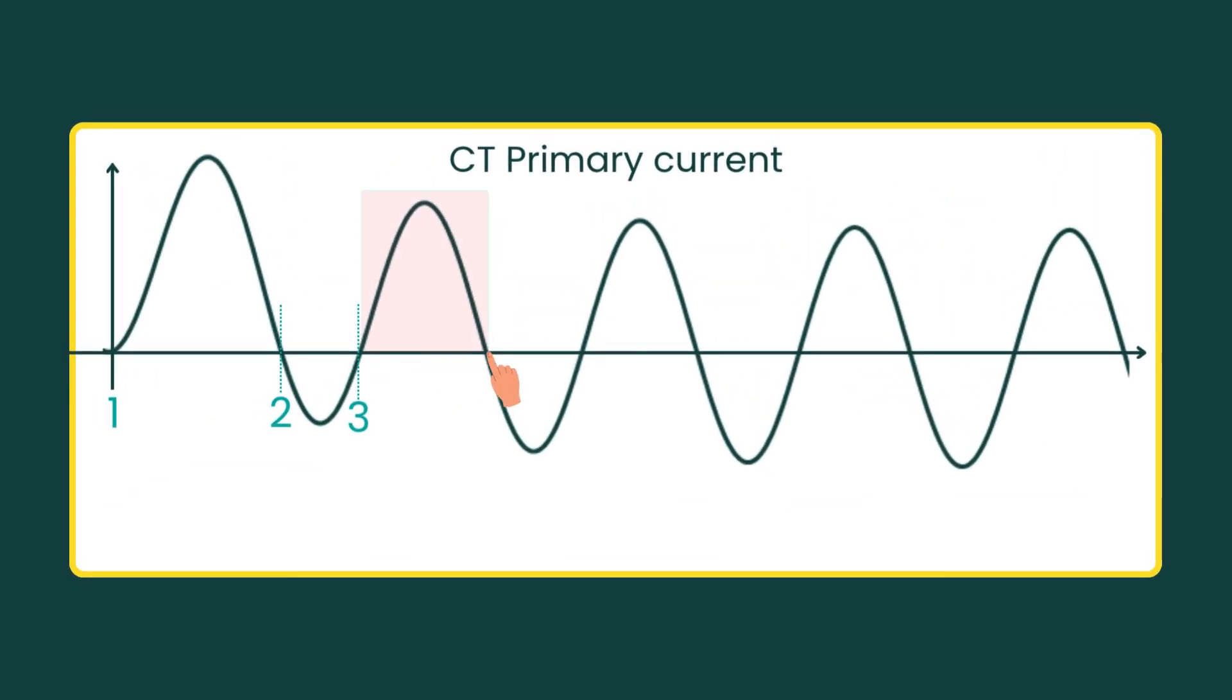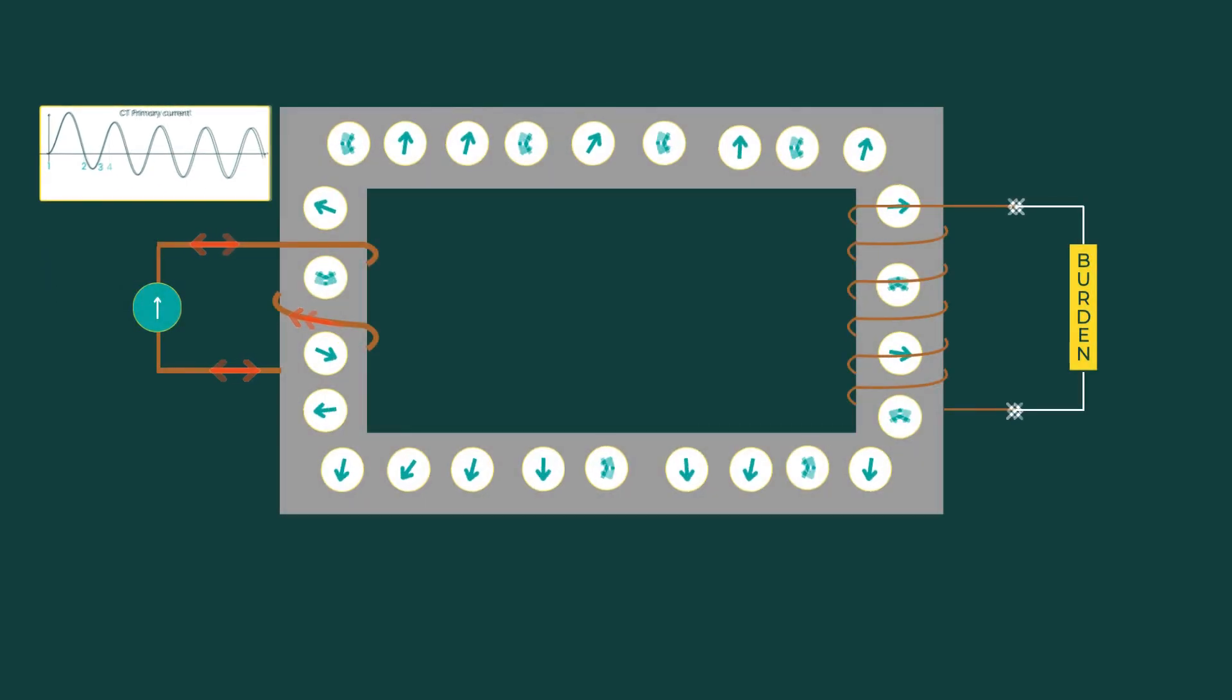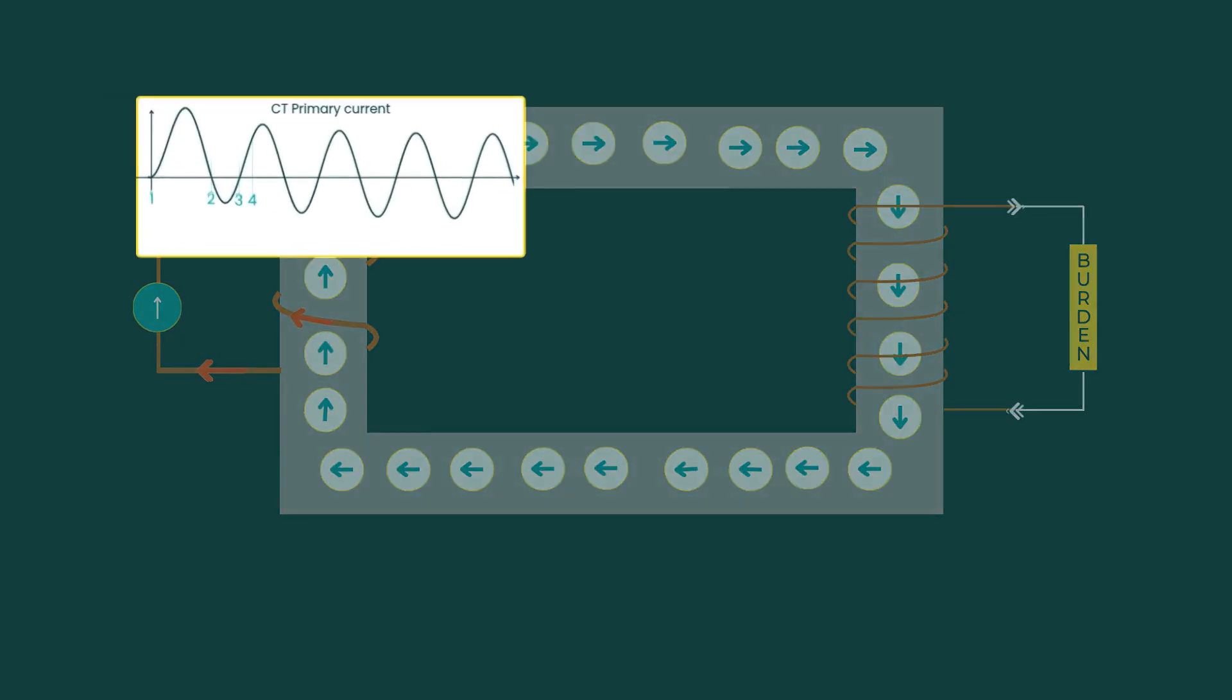In the second positive half cycle, the current continues aligning dipoles in the positive direction. But this time, before the half cycle ends, say around 0.4, all the dipoles become fully aligned. The core hits its magnetic limit. The CT saturates. Now the magnetic flux cannot change further, and the secondary current drops sharply. This is called asymmetrical saturation.